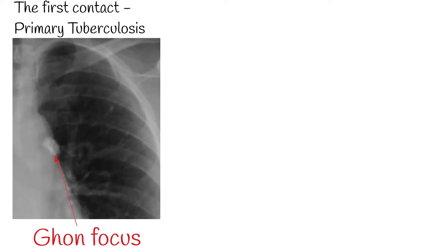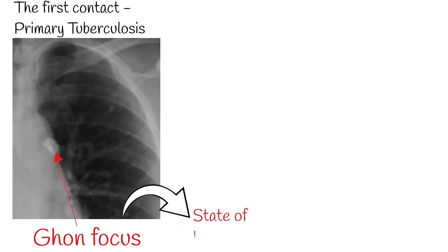The first contact of the Mycobacterium organism with a host leads to manifestations known as primary tuberculosis. This primary tuberculosis is usually localized to the middle portion of the lungs, known as the Ghon focus of primary TB. In most infected individuals, the Ghon focus enters a state of latency, known as latent tuberculosis. Most people who develop tuberculosis do so after a long period of latency, usually several years after the initial primary infection.